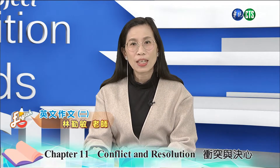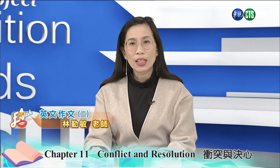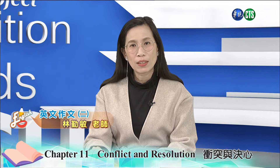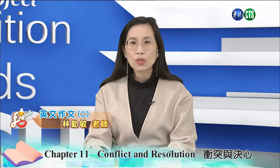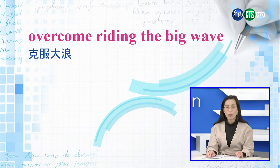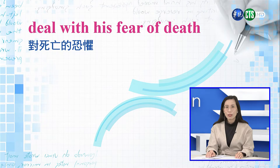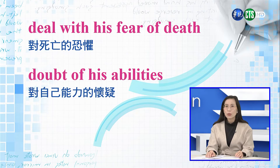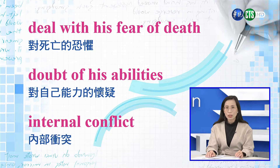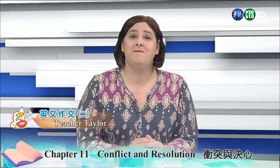举例来说，一个冲浪者他想要乘最大的浪潮，但是他很害怕，因为上一次的尝试失败了，而且他几乎淹死。那这个冲浪者必须要overcome riding the big wave，就是要克服大浪，这是一个external conflict外部冲突。那他还必须要deal with his fear of death，就是对于死亡的恐惧，还要deal with doubt of his abilities，对自己能力的怀疑，那这些都叫internal conflict内部冲突。